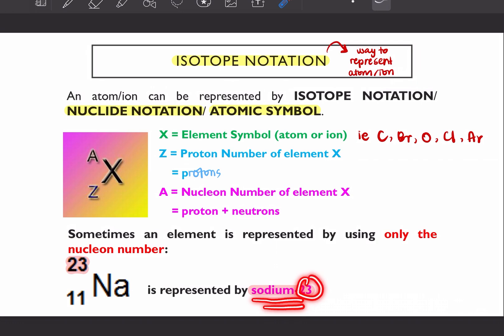So 23 is your A, your nucleon number, nucleon number yang ni.